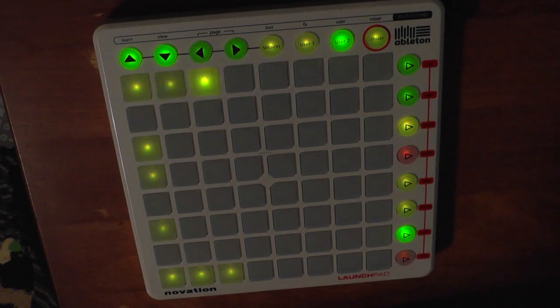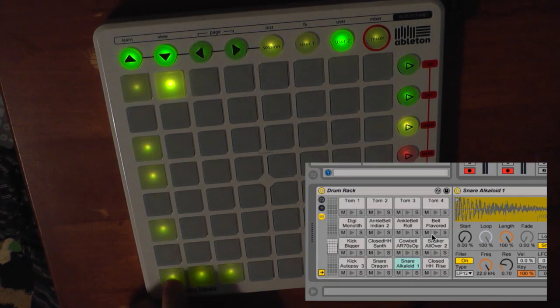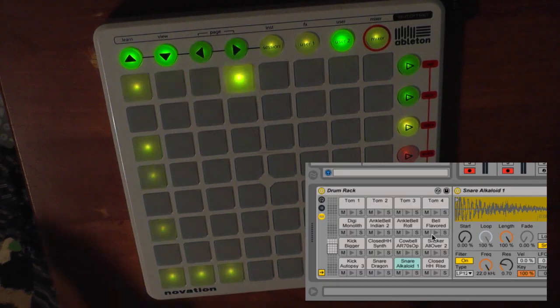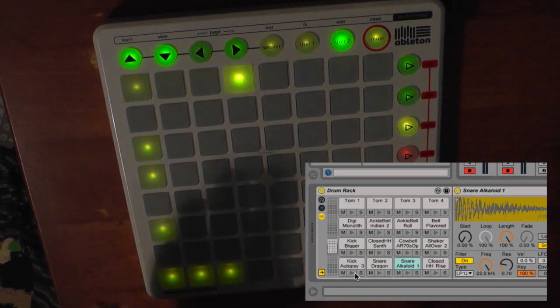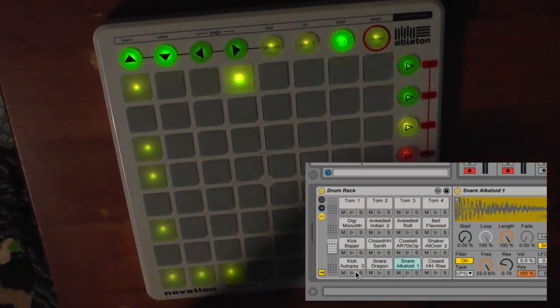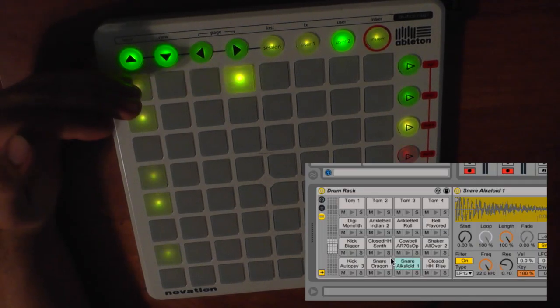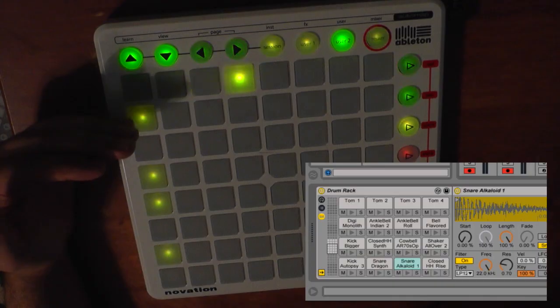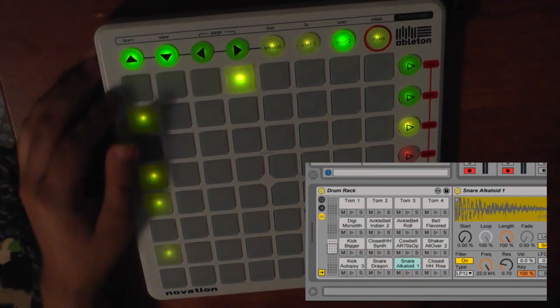Now, the cells on the drum rack are represented in groups of eight vertically. If you look on the screen, you should see a screen cap of my current drum rack. This is Kick Autopsy 3. If you move to the right of Kick Autopsy 3, you have Snare Dragon. And then up here is the Shaker. So that's the final in that row of eight. When you move up, you bank up a cell at a time. So now, instead of Shaker all over two, this is Digimonolith. And that's how that goes.